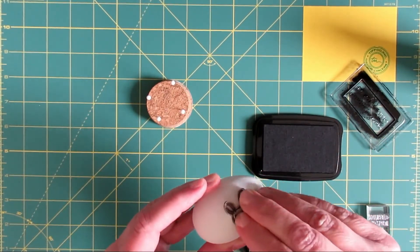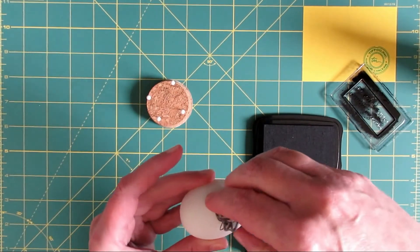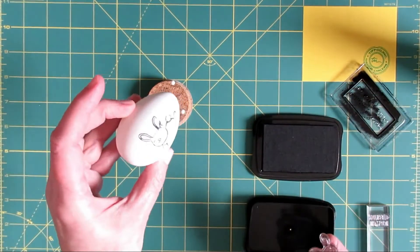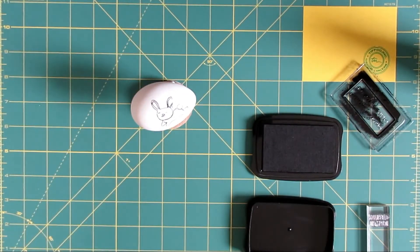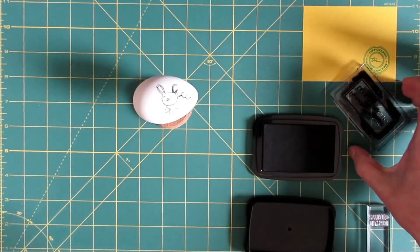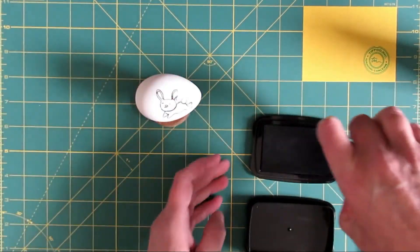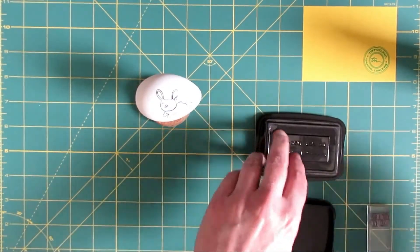A lot of it depends on the shape and size of the stamp that you're using. Very small stamps can sort of be dotted onto the egg, while sentiments might need to be rolled onto the surface of the egg. And you might find that you screw it up.